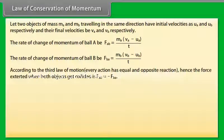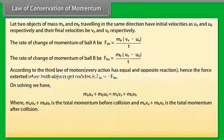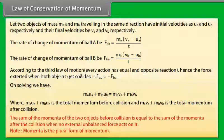According to the third law of motion, every action has equal and opposite reaction. Hence the force exerted when both objects collide is Fab = -Fba. On solving we have ma × ua + mb × ub = ma × va + mb × vb, where ma × ua + mb × ub is the total momentum after collision. The sum of the momenta of the two objects before collision is equal to the sum of the momenta after the collision when no external unbalanced force acts on it.